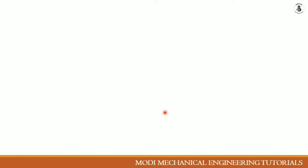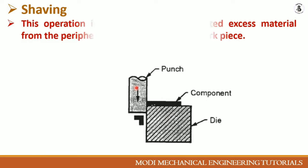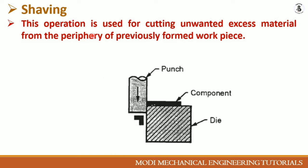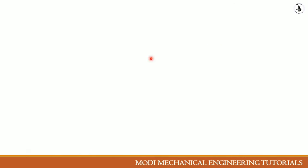Shaving operations: the component rests on the die material, and the punch moves in one direction to cut the workpiece to the desired shape and size. Shaving is the operation used for cutting unwanted excess material from the periphery of a previously worked workpiece. In this process, only a very small amount of material is removed.